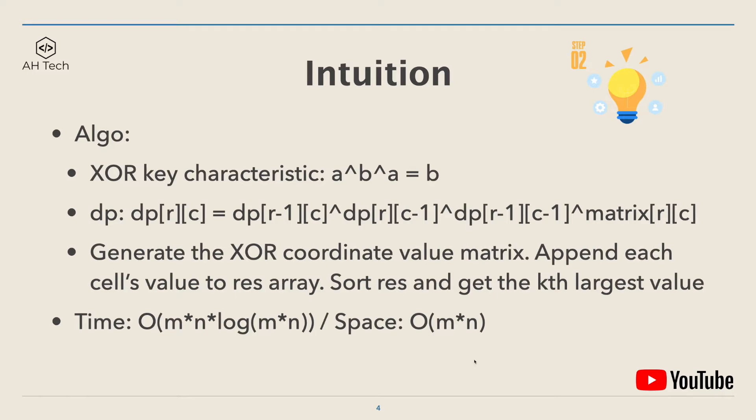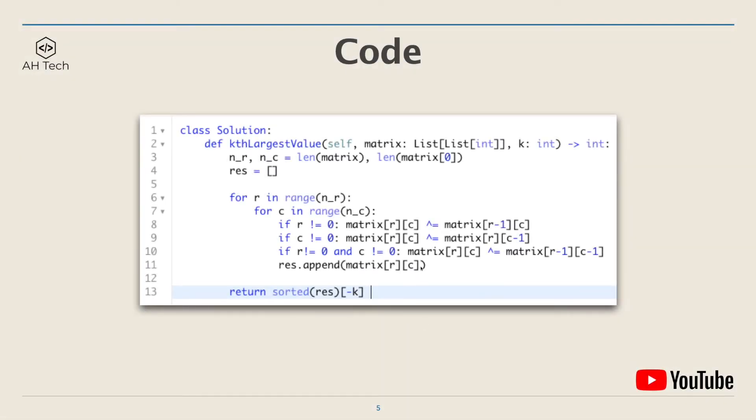Now let's look at the code. The code is pretty short and concise. Basically, we just iterate through every row and column in the matrix, then implement the DP transition equation. Here we can modify the input matrix directly, then append the DP value to the res array. At the end, we sort the res array and return the kth largest value. Now let's see the code in action.